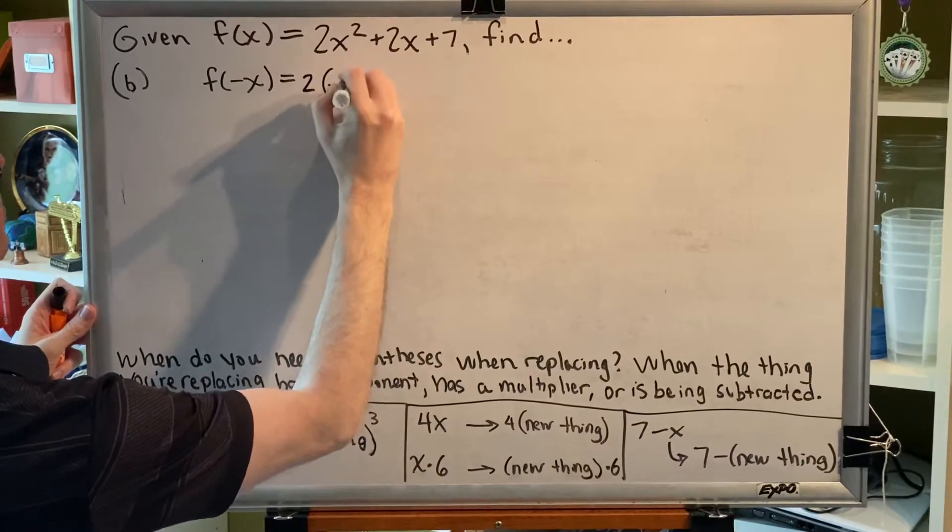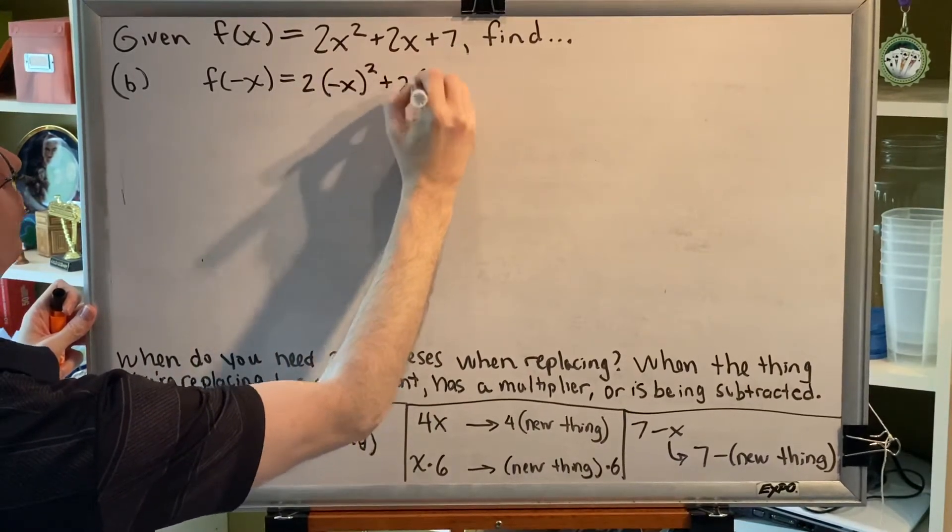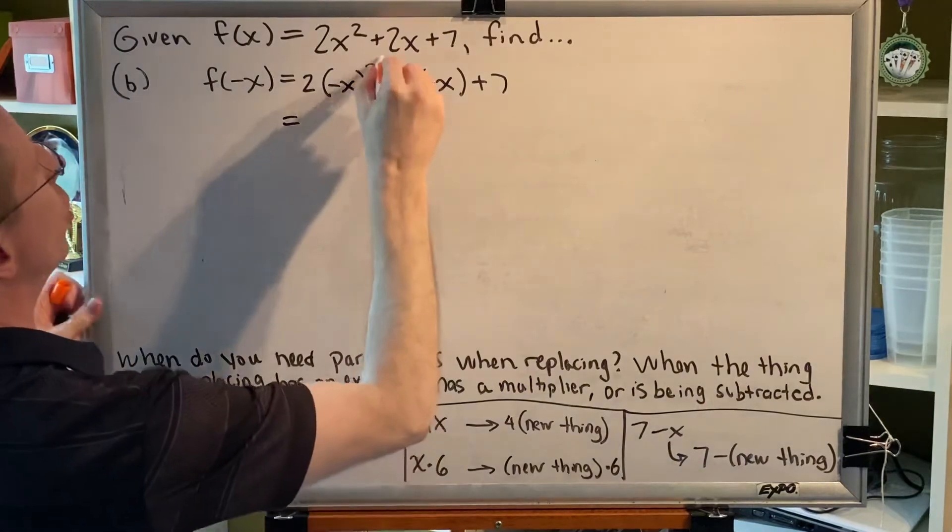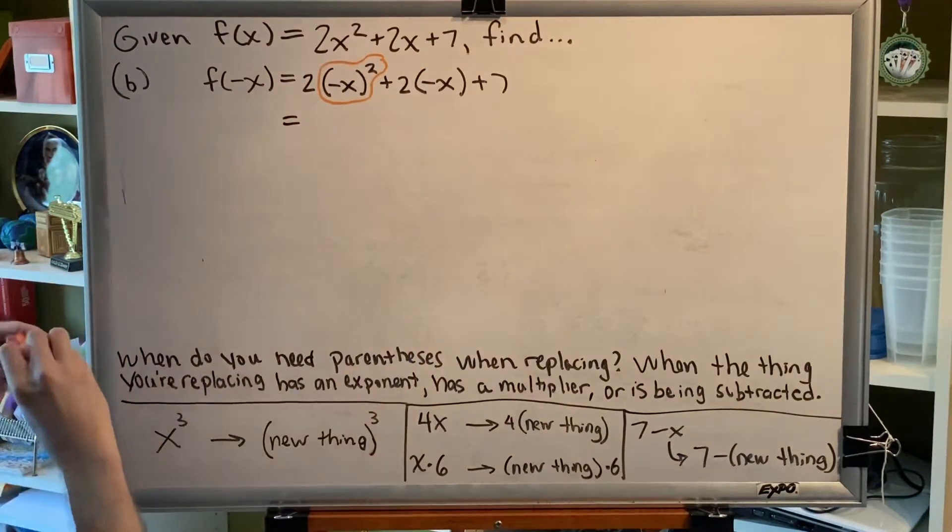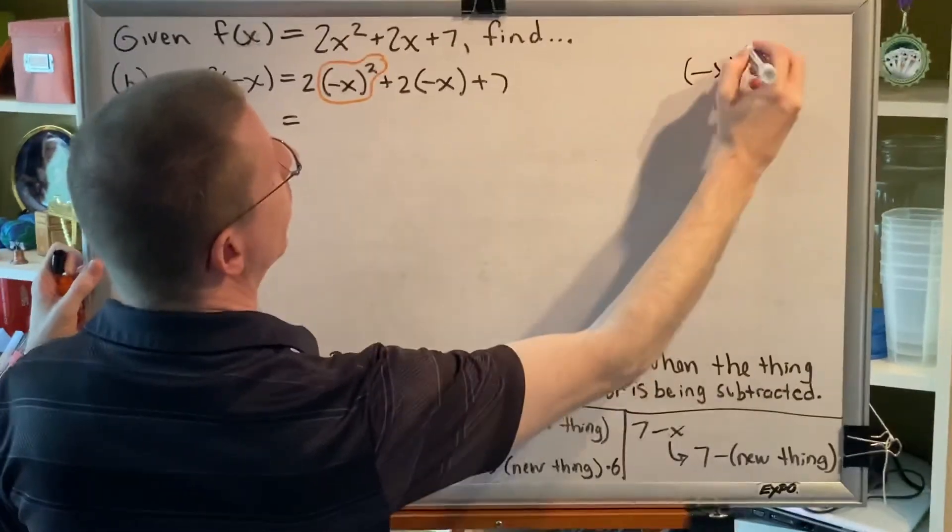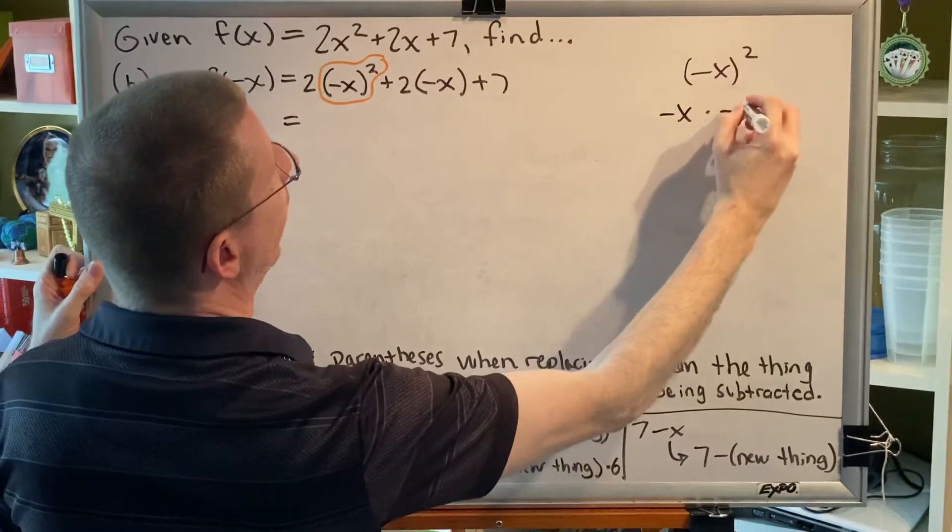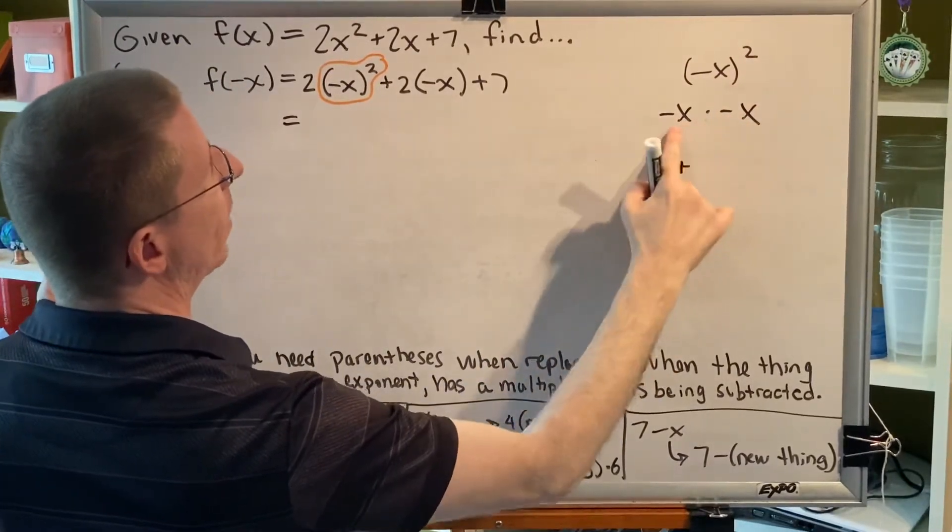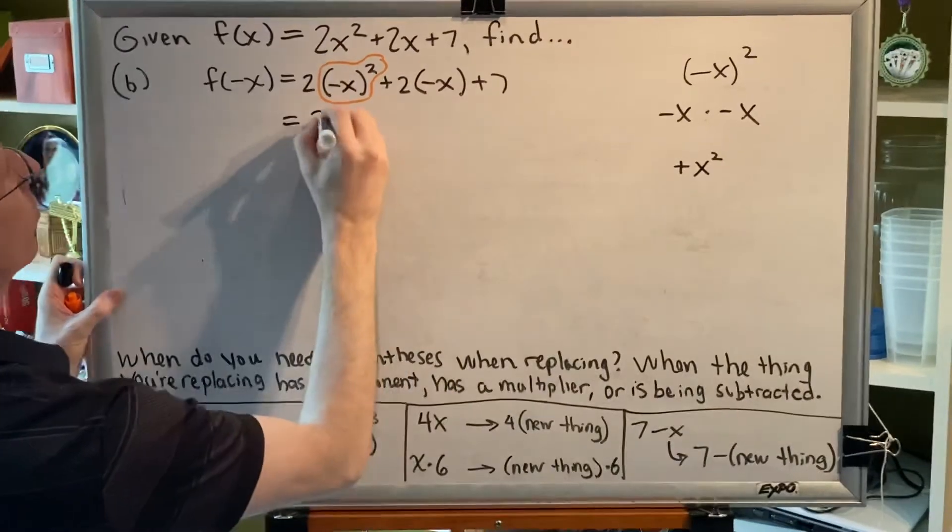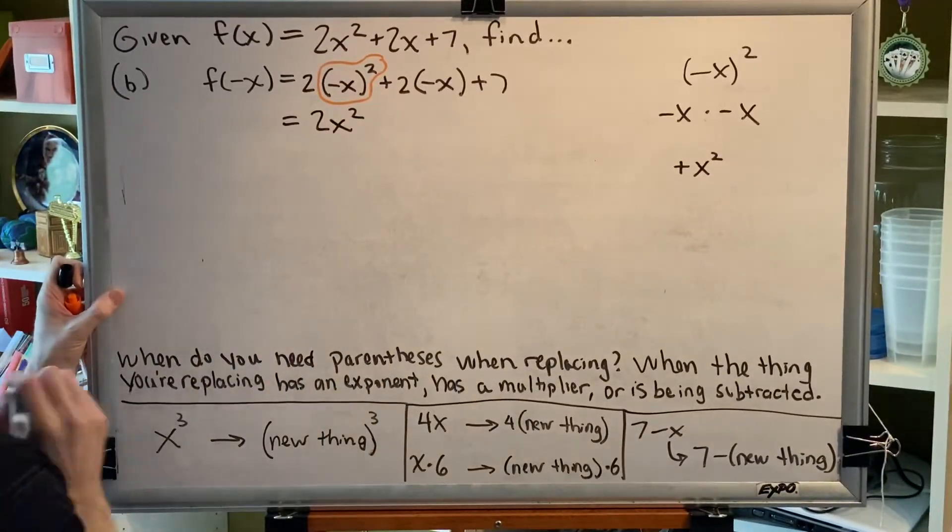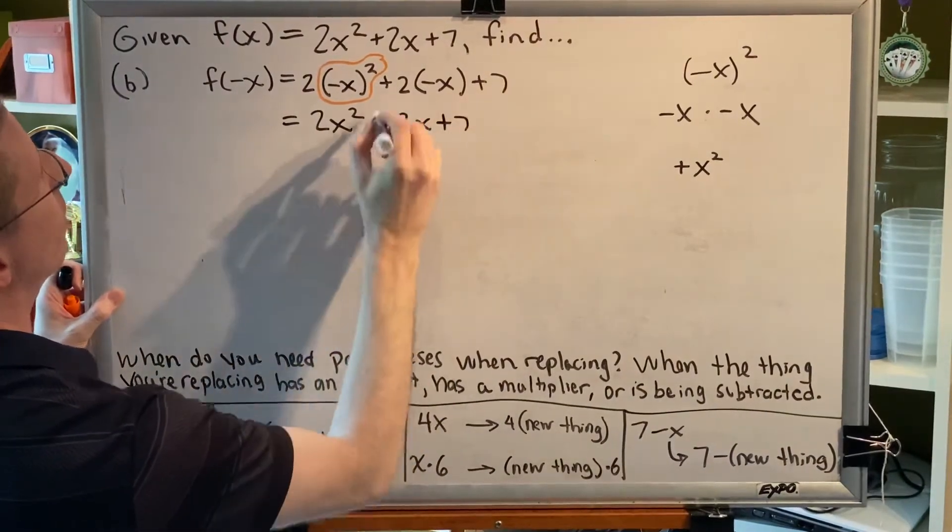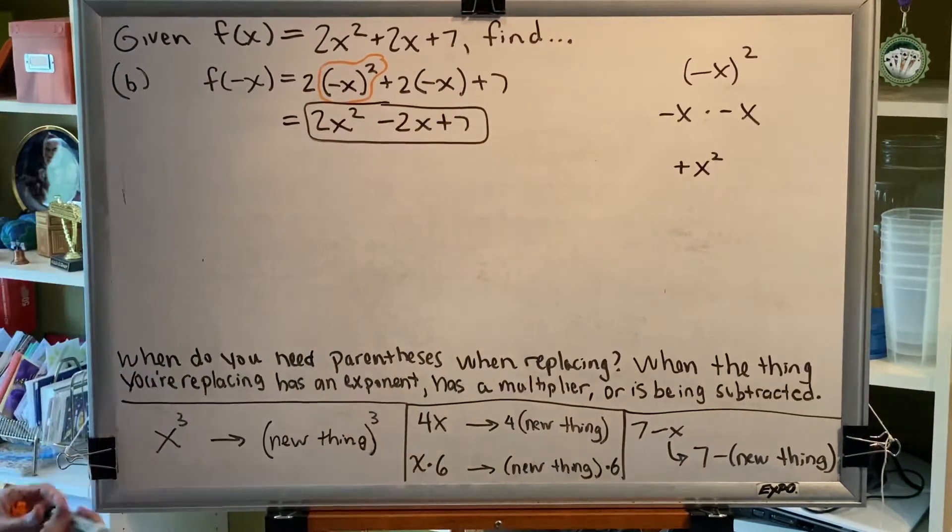So we get 2(-x)² + 2(-x) + 7. Exponents have to come first. So we need to figure out what is (-x)². Well, -x squared is the same thing as -x times -x. A negative times a negative is a positive, and an x times an x is x². So we get positive x². So this is going to be 2x². Then we're adding a negative. So this will be minus 2x plus 7. Our final answer is 2x² - 2x + 7.